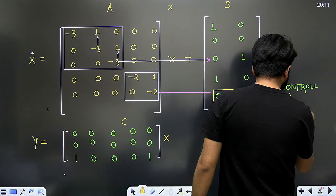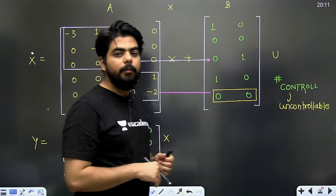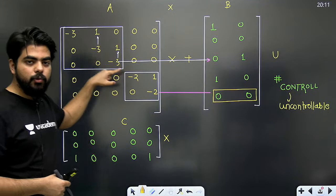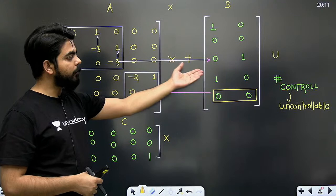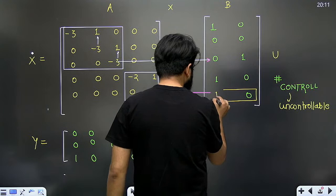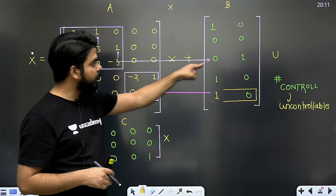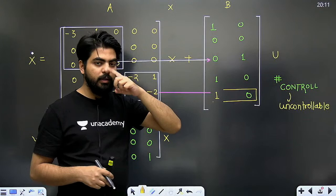यह एक बड़ा simple logic है। अगर वो सारे 0 नहीं होते, तो यह matrix आपकी controllable हो जाती। For example, अगर यहाँ पर 1 लिख देता - question को modify करके - तो एक Jordan block ऊपर वाला, एक Jordan block नीचे वाला। इसके सामने का element था 0 और 1 - सारे 0 नहीं थे। इसके सामने का element था 1 और 0 - सारे 0 नहीं थे। इस case में यह matrix controllable हो जाती।